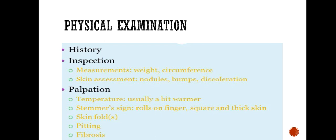Diagnosis of lymphedema by physical examination: first, take patient history — family history or any surgery history. Inspection includes weight measurement, circumference of the thigh, and skin assessment for nodules, bumps, or discoloration. On palpation: temperature is usually warmer, Stemmer's sign positive, fingers appear square and thick, skin folds, pitting edema, and fibrosis will be present. These are indicators of lymphedema.